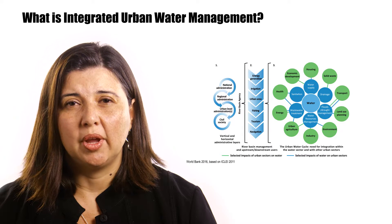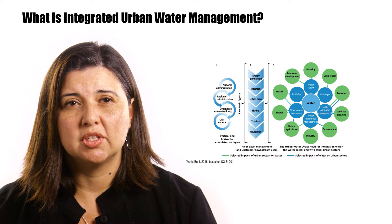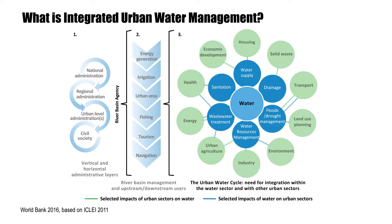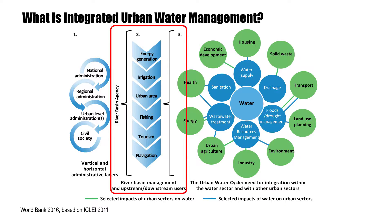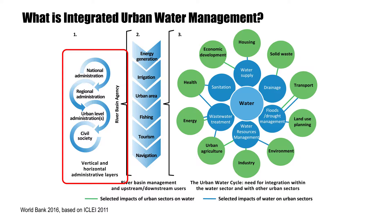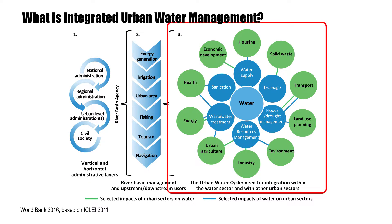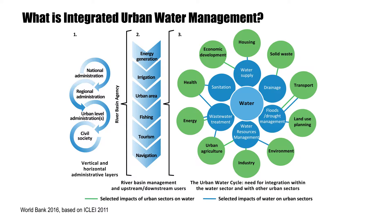IUWM offers a holistic way of undertaking strategic planning by considering the management of competing water users at the level of the watershed, while recognizing the needs of the city as well as those of upstream and downstream users. IUWM takes into account the needs of all users within the basin, while working across vertical and horizontal administrative boundaries to overcome the traditional fragmentation of the urban water cycle, allowing consideration and integration of interdependent sectors — both urban and related sectors shown in green, and the different water subsectors shown in blue.